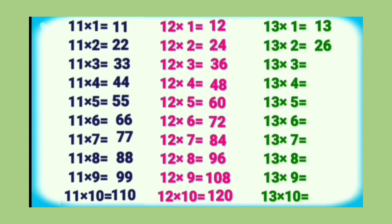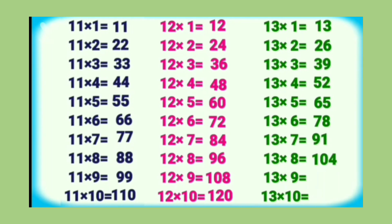Table of 13: 13 1's are 13, 13 2's are 26, 13 3's are 39, 13 4's are 52, 13 5's are 65, 13 6's are 78, 13 7's are 91, 13 8's are 104, 13 9's are 117, 13 10's are 130.